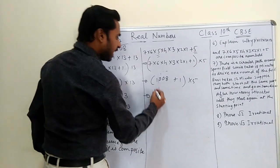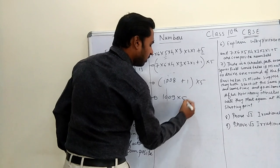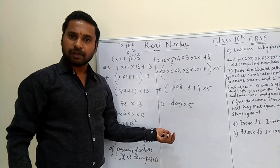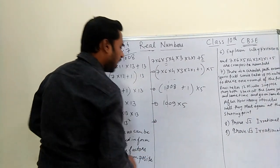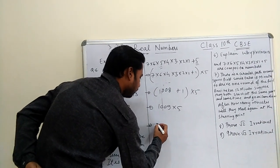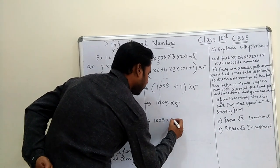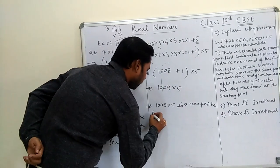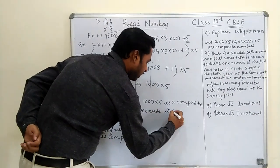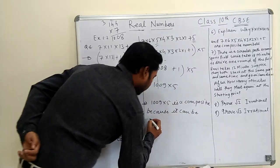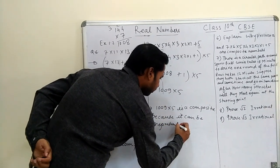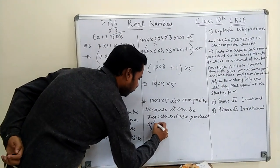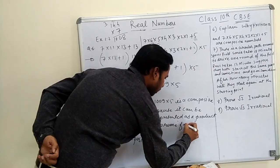After computing 7! = 5040, we get 5040 + 5. Taking 5 as common, we get 5 × (1008 + 1) = 5 × 1009. So we have 1009 × 5, which is a composite number because it can be represented as a product of prime factors.